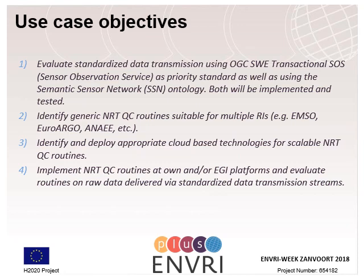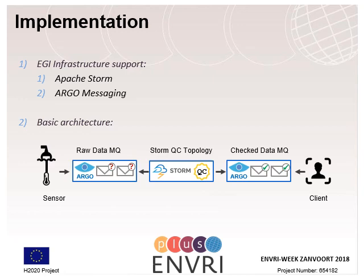For the implementation of the use case, we used two essential cloud technologies provided by EGI: Apache Storm for processing the data stream, and the EGI Argo messaging service, which is based on Kafka, to handle the submitted data. The basic idea was to let the sensor publish standardized data onto a dedicated Argo raw data topic or message queue. The Storm topology provides a dedicated spout subscribed to this topic to retrieve the data, and after quality control has been performed, the quality-control-checked data is published via another Argo topic for checked data, which can be used by any client that subscribes to it.